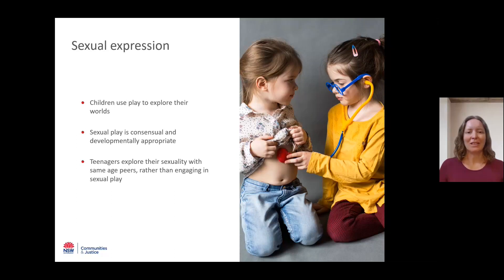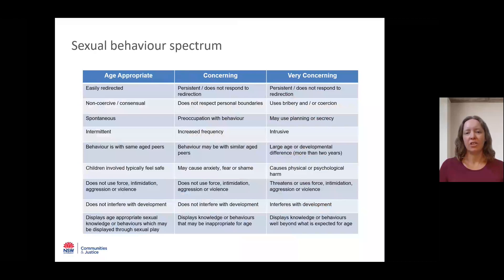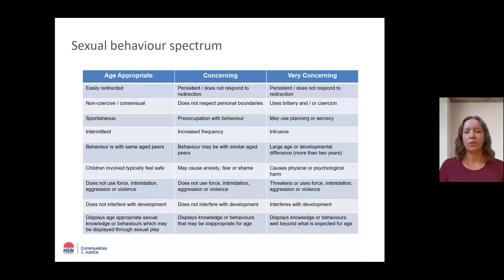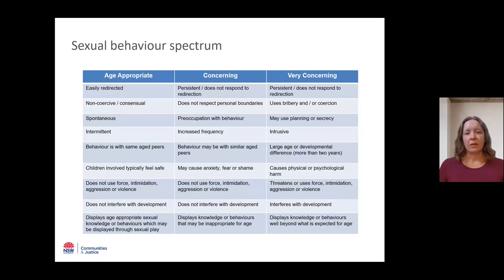If sexual play and exploration are considered developmentally appropriate behaviours, you may wonder how you can tell when behaviours are harmful. Sexual behaviours fall across a spectrum from age-appropriate to very concerning. Age-appropriate sexual behaviours are those that are developmentally normal and expected. Concerning sexual behaviours are outside what is developmentally expected, may be persistent or frequent, and are likely to place kids at risk. Very concerning behaviours may involve victimisation and can be compulsive, placing those displaying them or others at risk of physical or psychological harm. The spectrum of behaviours is pictured on the slide — be aware that this is a guide, but is not a definitive list.